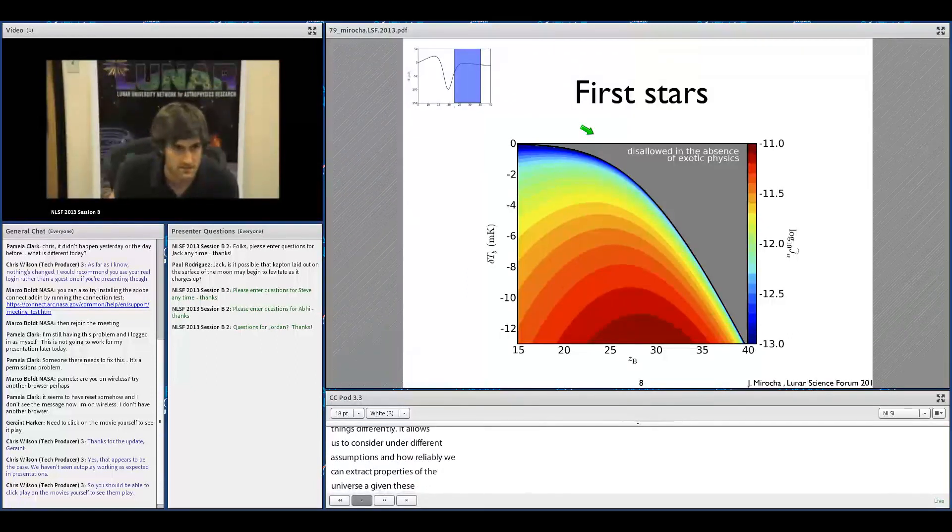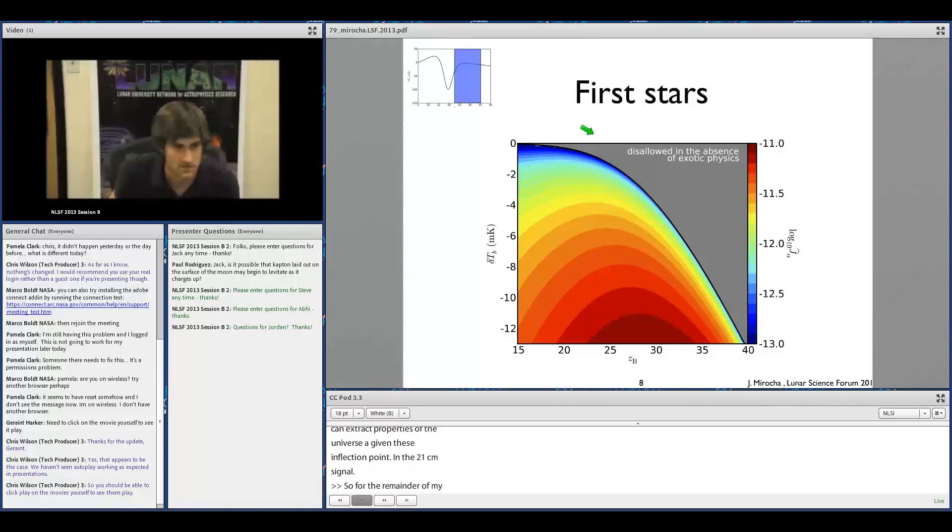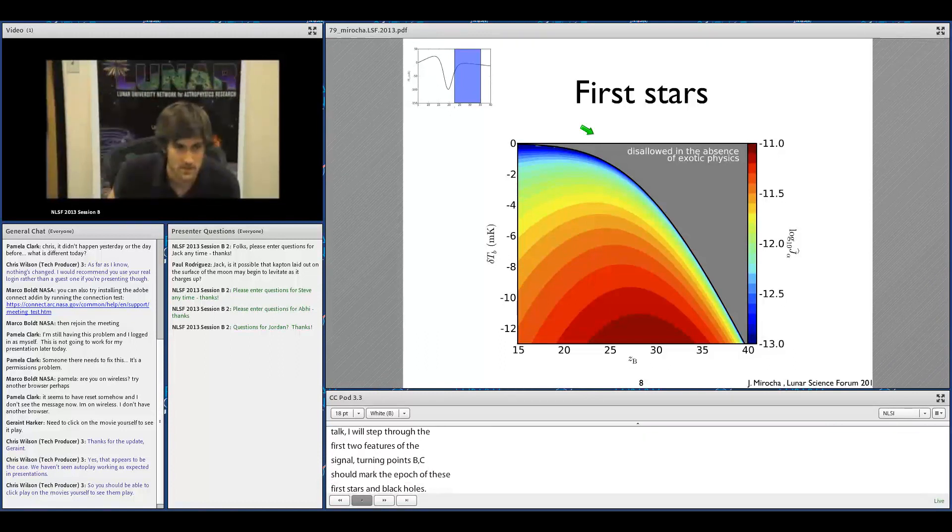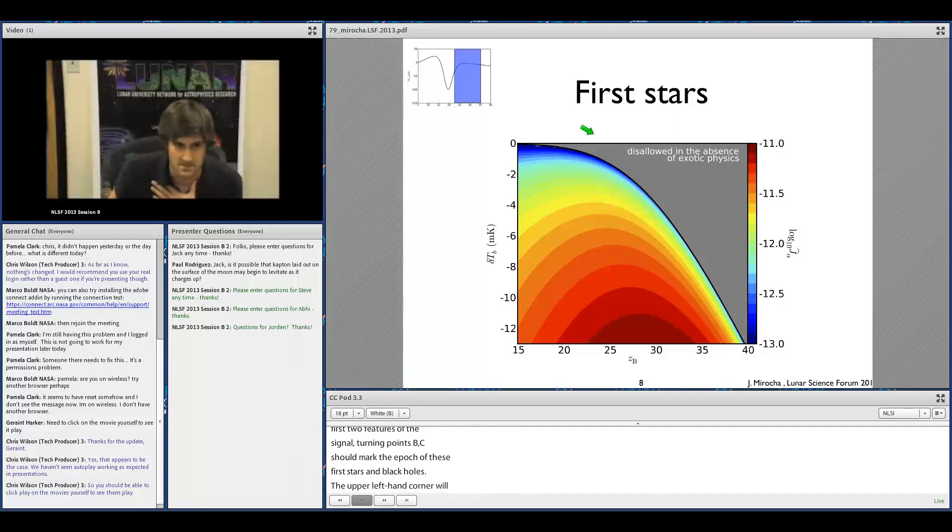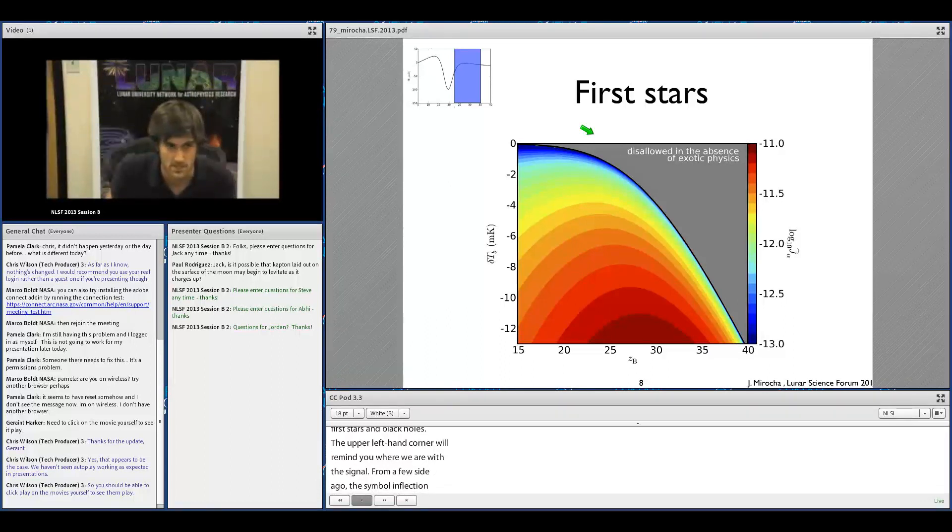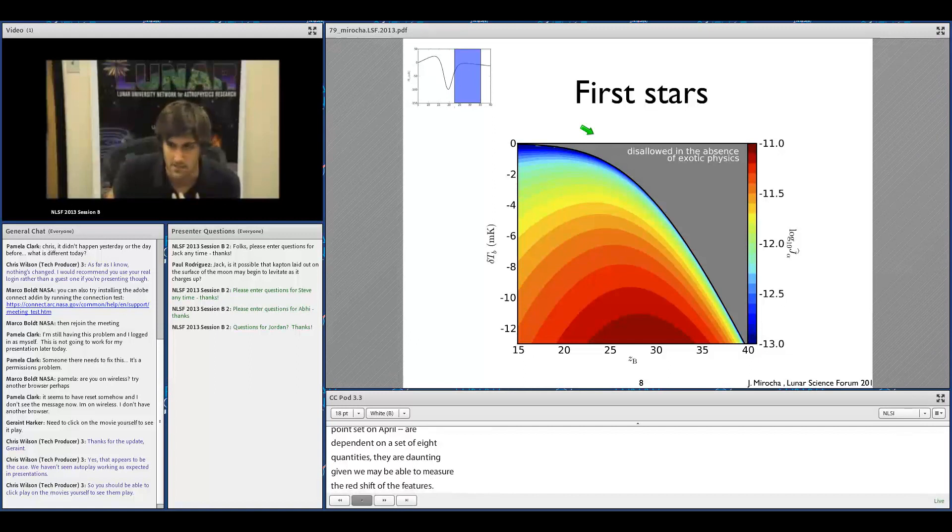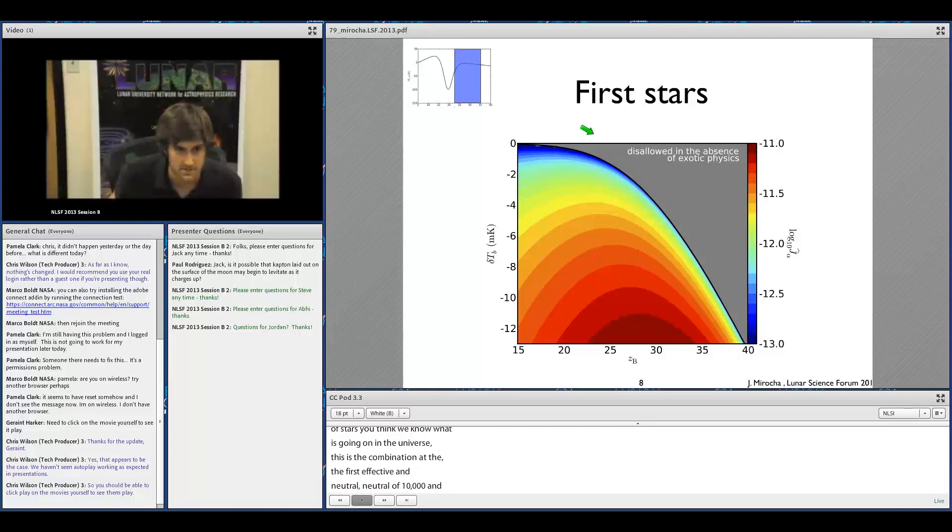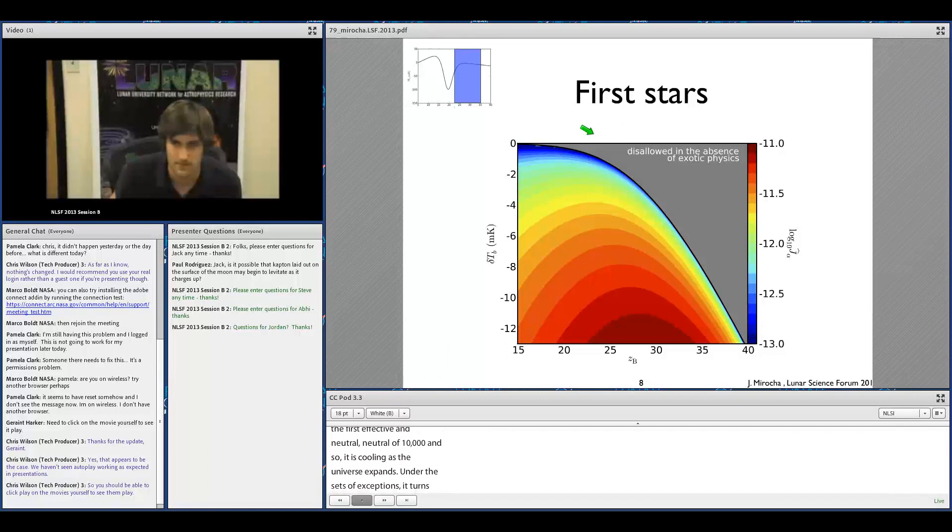For the remainder of my talk, I'm going to step through the first two features of the signal, what we've been calling turning points B and C, which should mark the epoch of the first stars and first black holes. The upper left corner will remind you where we are in the signal. If you remember from a few slides ago, I said that the signal and its inflection points in general depend on a set of eight quantities, which is really daunting given that we may only be able to measure the redshift and the brightness temperature of any of these features. But prior to the first generation of stars, we think we know what's going on in the universe.